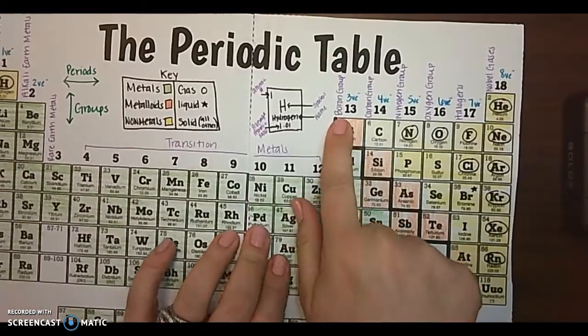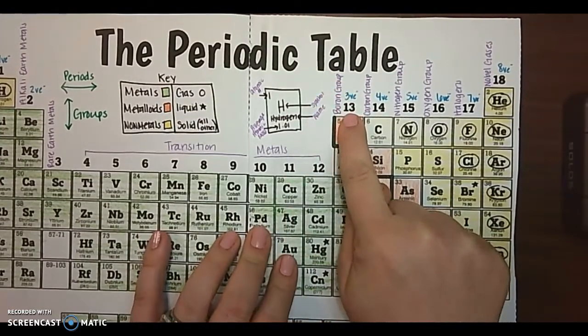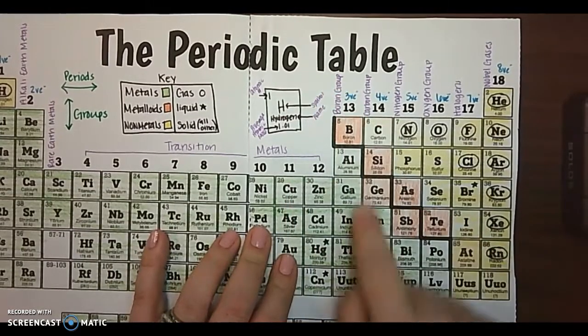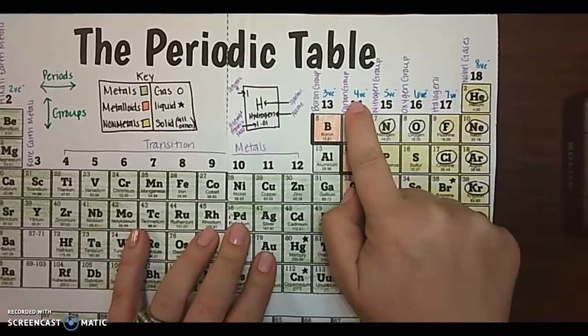Group 13 is called the boron group and it has three valence electrons. This group, group 14 is called the carbon group and it has four valence electrons.